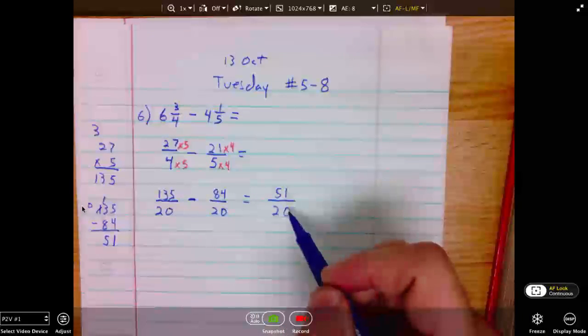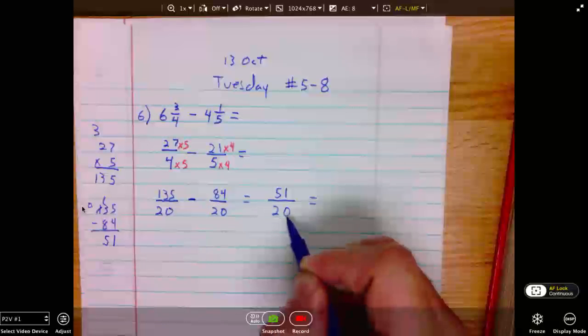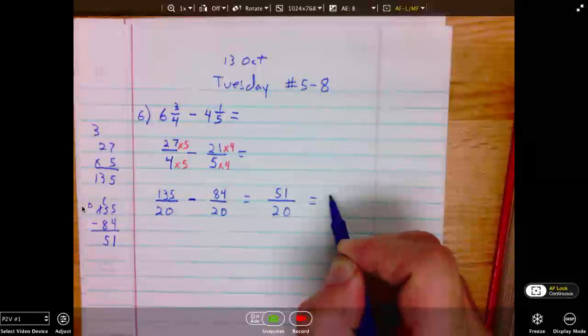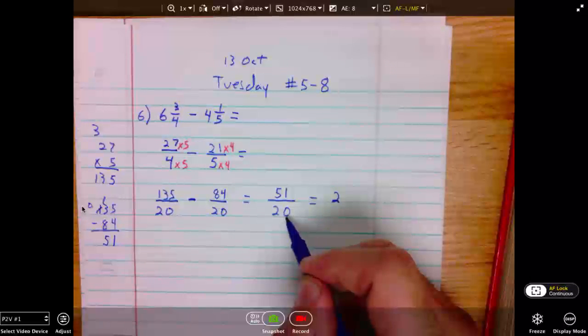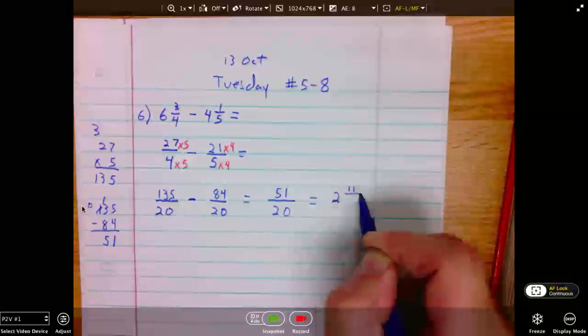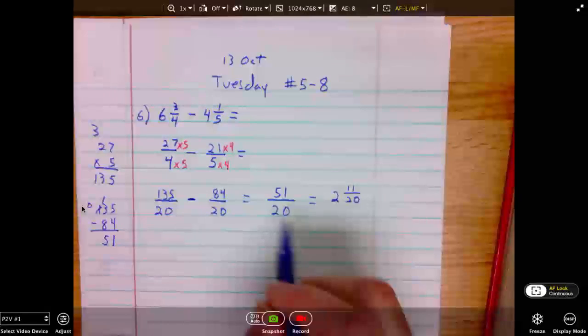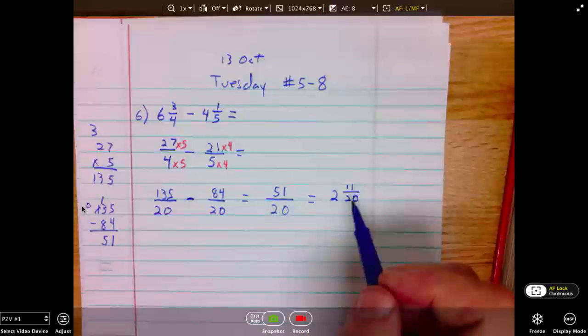We have 51 over 20. Lastly, we will reduce this improper fraction. 20 goes into 51 2 whole times. 2 times 20 is 40. 51 minus that 40 is 11.